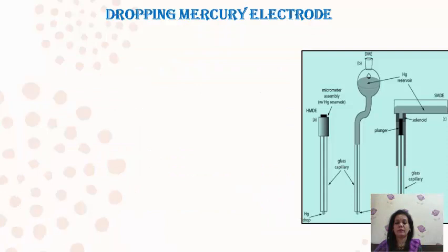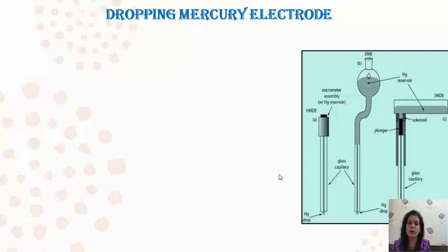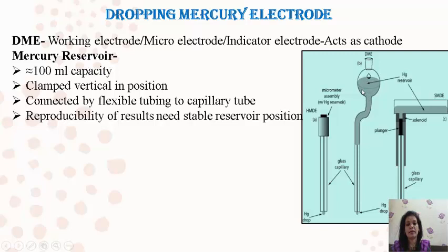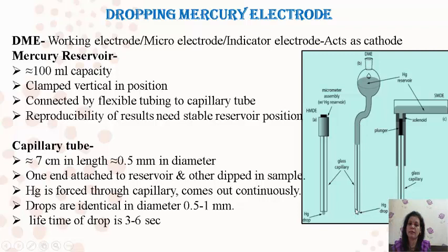The dropping mercury electrode is a micro electrode utilized in polarography. The arrangement consists of a reservoir unit where liquid mercury is stored. This reservoir is clamped in a vertical position and connected to a capillary. The capillary is inserted into the mercury, and the other end is dipped in the solution under study. The length and diameter of the capillary determines the drops of mercury produced during the process.